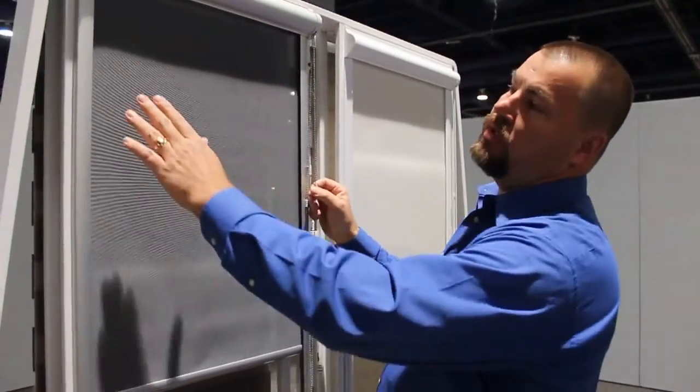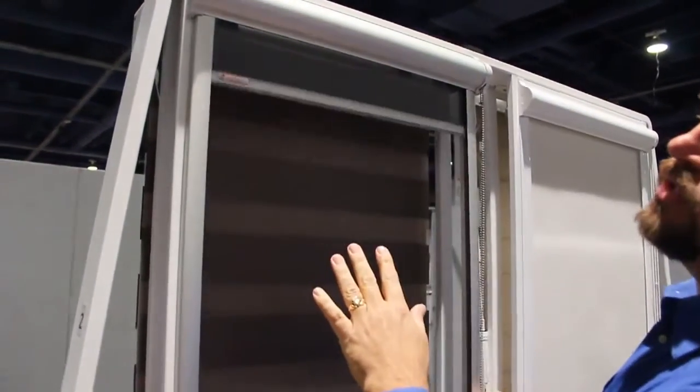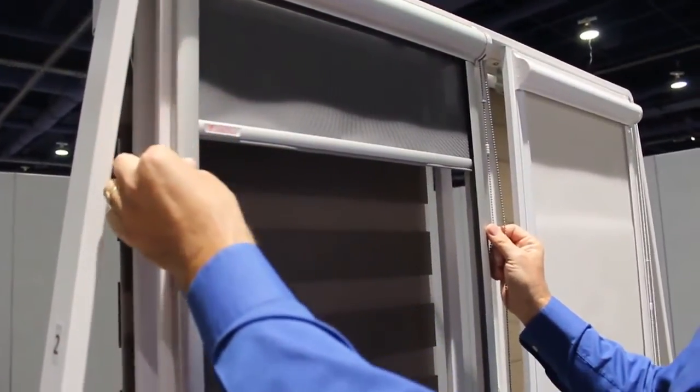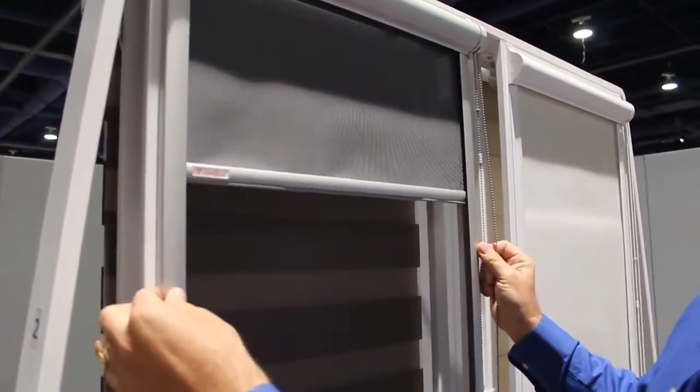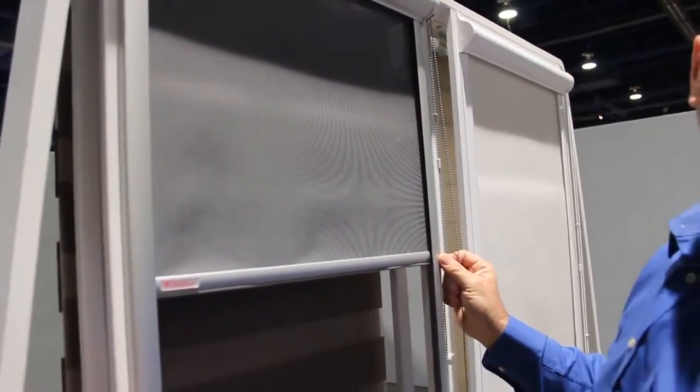Vertilux has a very small contoured head rail cassette system that houses the roller shade and the clutch. As you can see here, this is made for French doors. This has a very low profile that can be surface mounted on top of the door and still have clearance for the door handle.